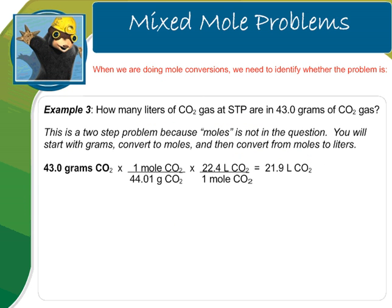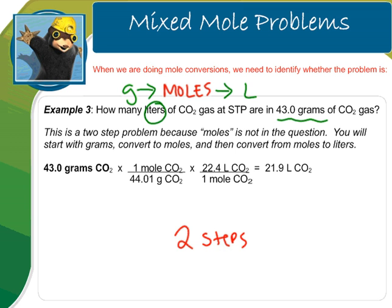Let's look at another example. Example three: how many liters of carbon dioxide gas at STP are in 43 grams of carbon dioxide gas? Your given is in grams and you're converting to liters. You cannot do that in one step — it's going to take two steps because you have to convert to moles in the middle. Looking at the work, we started with grams, put grams on the bottom so our units can cancel, converted to moles, then put moles on the bottom and converted lastly to liters. Putting this all in my calculator, you end up with 21.9 liters of carbon dioxide as your final answer.